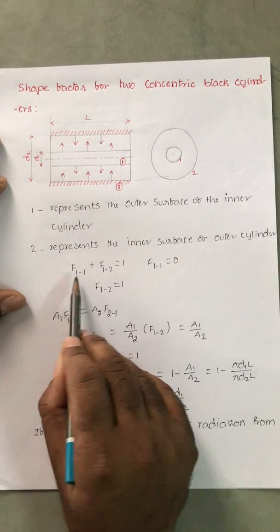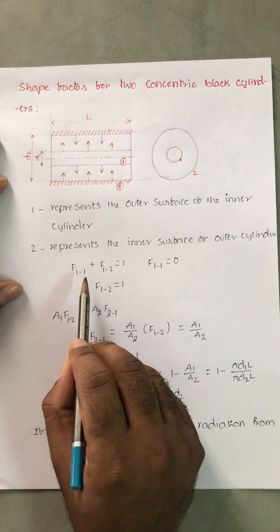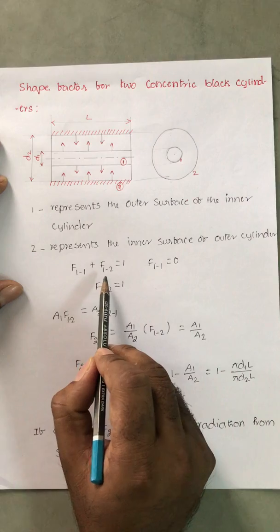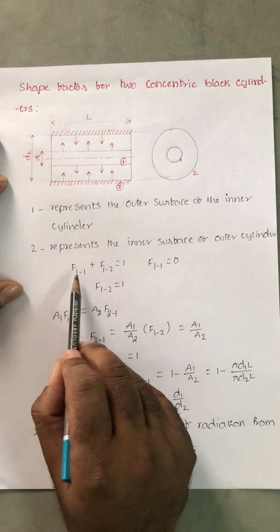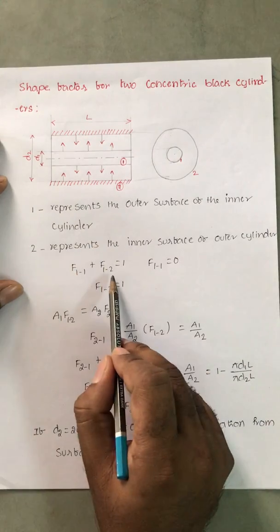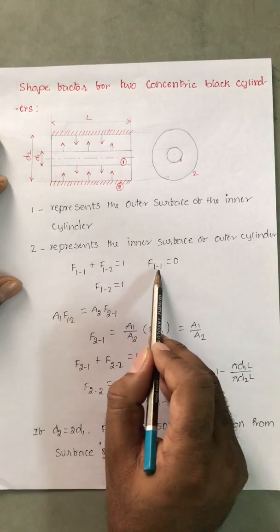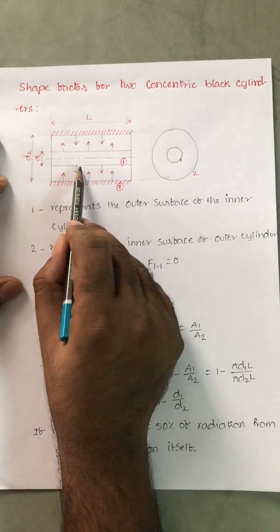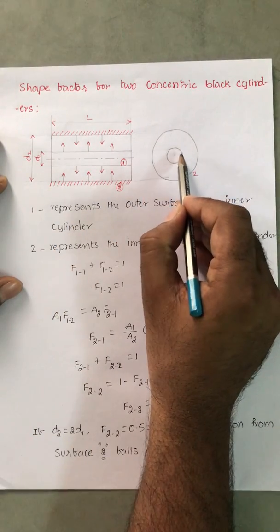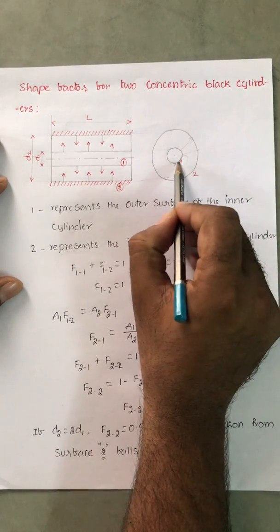F₁₁ plus F₁₂ equal to 1. You know, sum of all shape factors for any surface is equal to 1. F₁₁ plus F₁₂ equal to 1 because there are only two surfaces. F₁₁ is 0 because it is a flat surface. So whatever radiation which is emitted by 1 will strike 2 only. It will never come and strike the same surface. F₁₁ is 0.